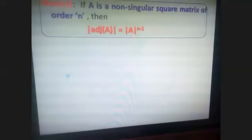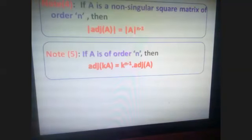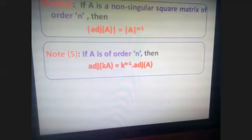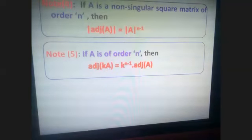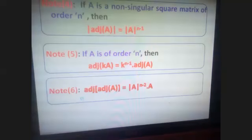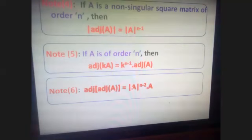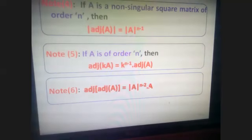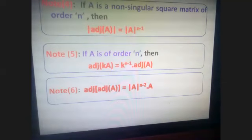Result five: adjoint of kA, where A is a square matrix of order n, is k raised to (n−1) times adjoint of A. You can think through how this follows easily. Further, adjoint of adjoint of A is det(A)^(n−2) times A. Keep these results in mind — adjoint of adjoint of A equals det(A)^(n−2) · A.